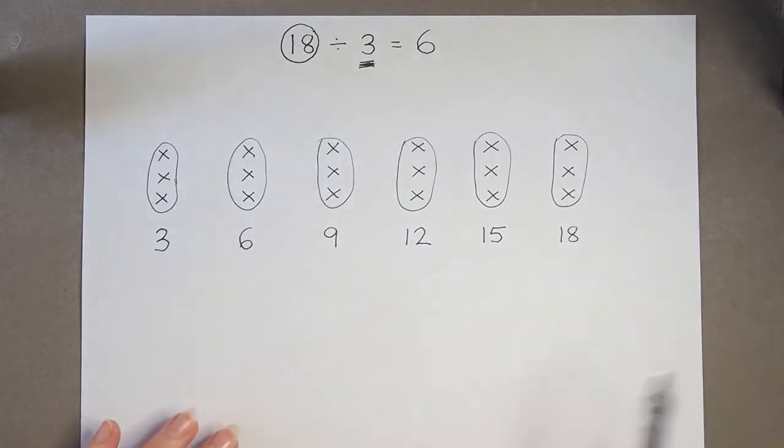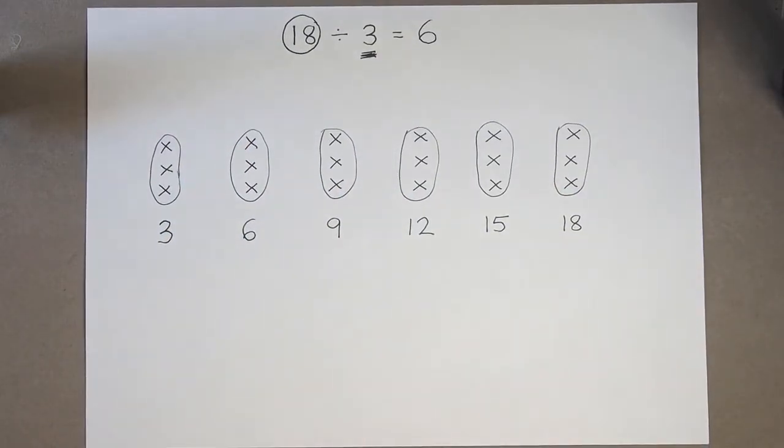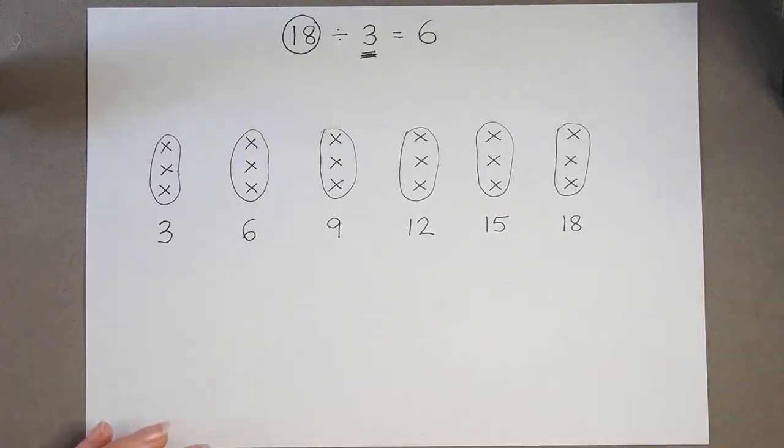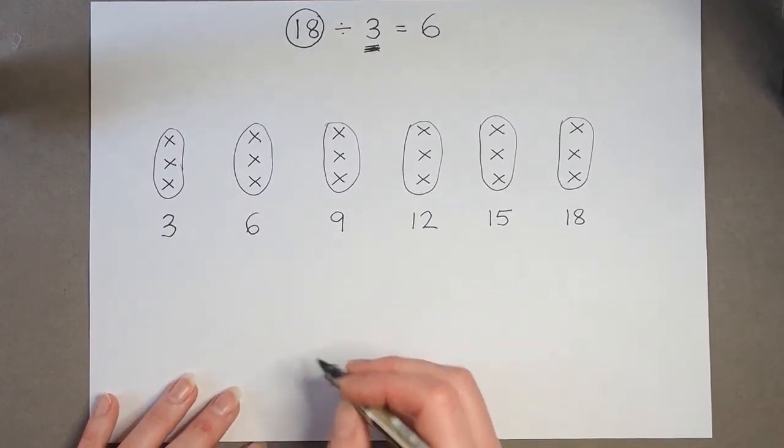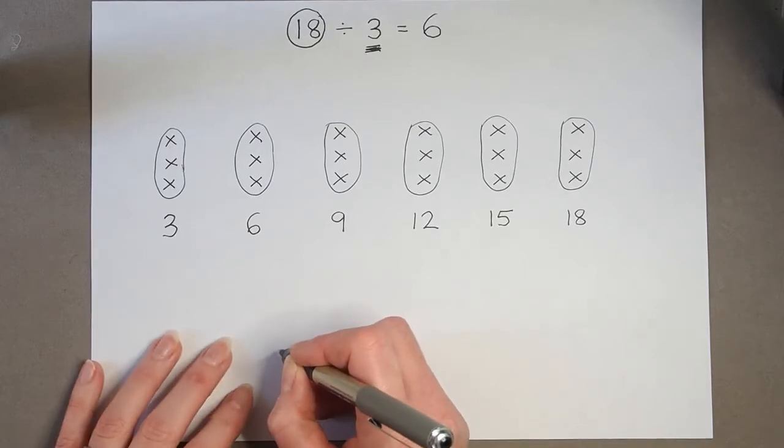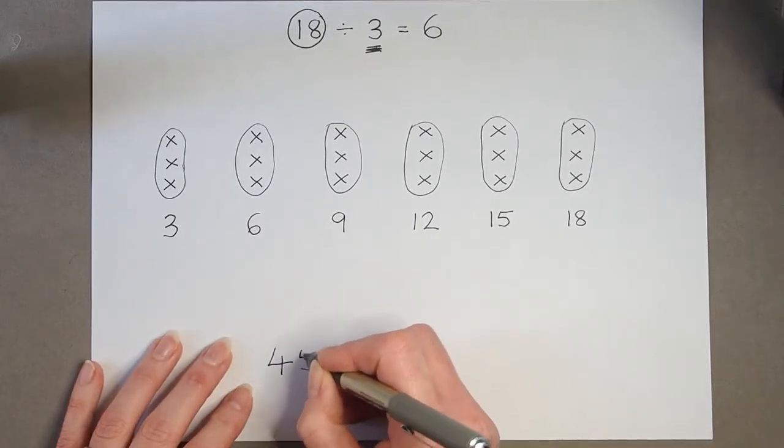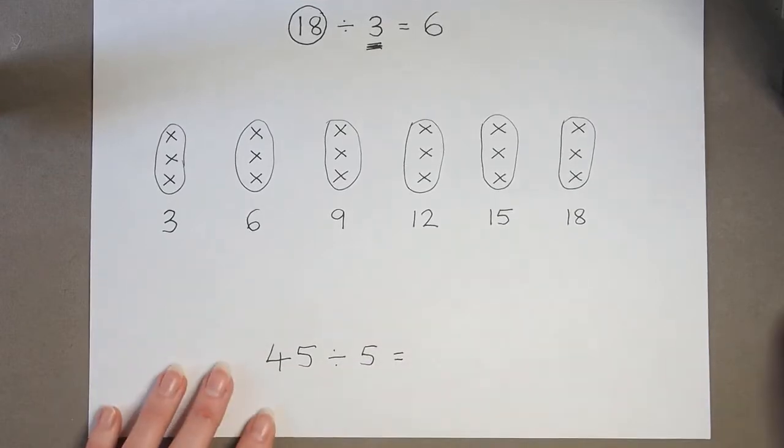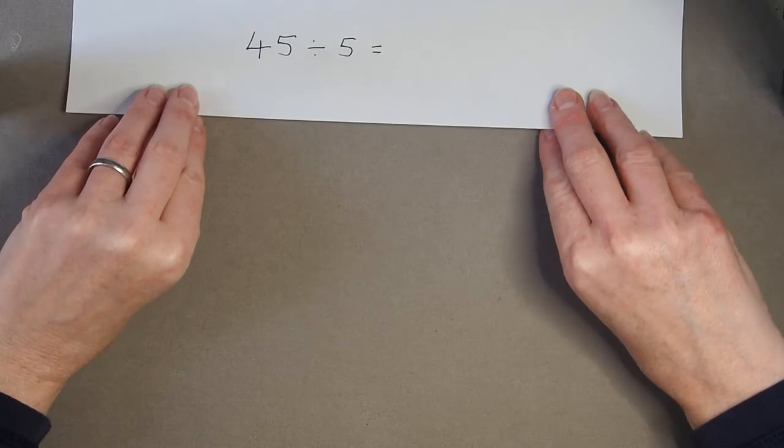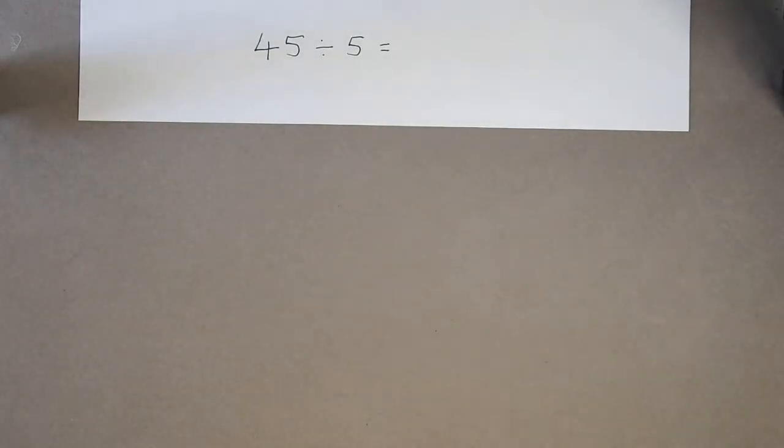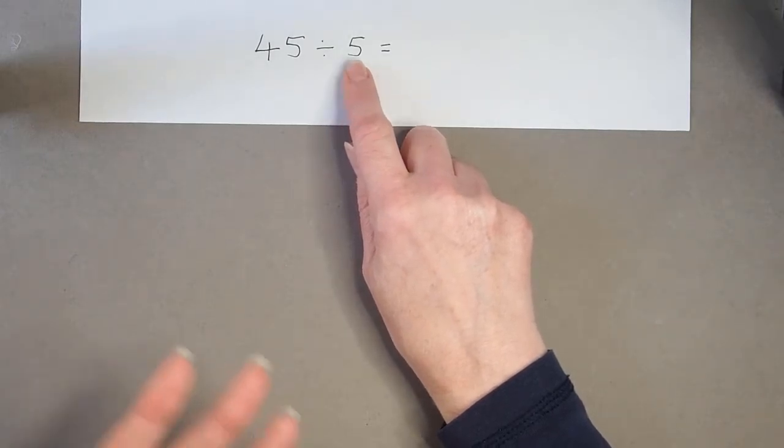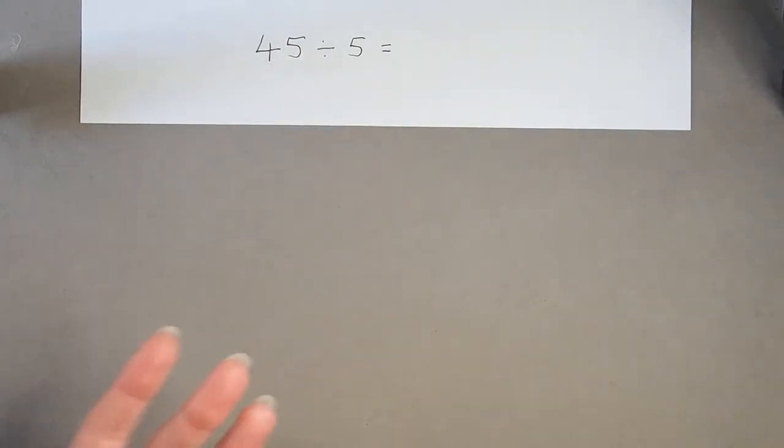So let's try one more calculation without using crosses or dashes or whatever to record. Let's just work it out by counting in those multiples. So let's do 45 divided by 5.